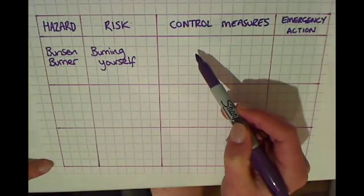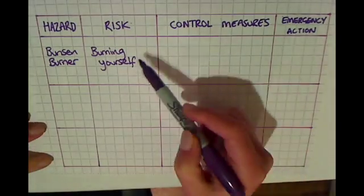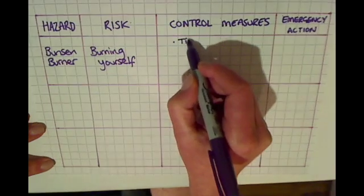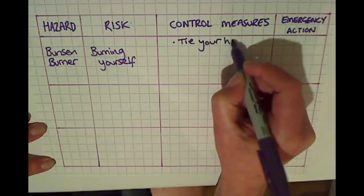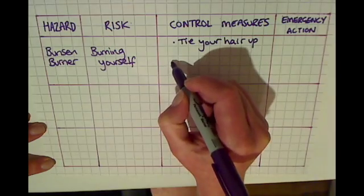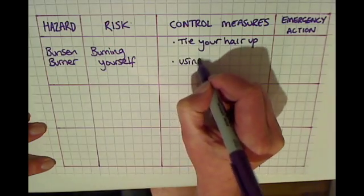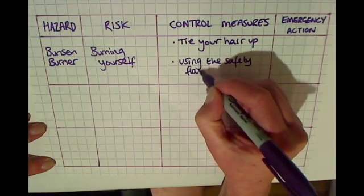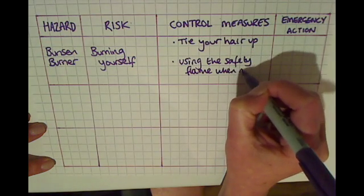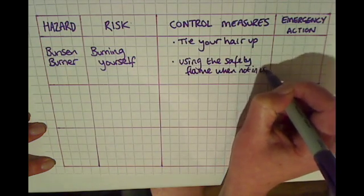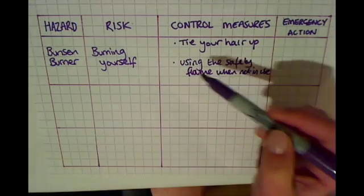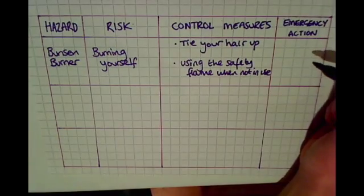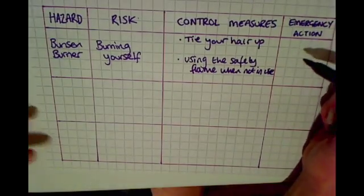In the control measures we need to write about what we would do to prevent the risk from happening — things such as tying your hair up, using the safety flame when not in use, and keeping the Bunsen burner on a heatproof mat in the middle of the table.